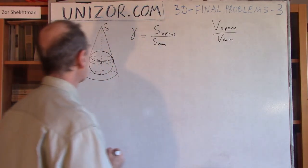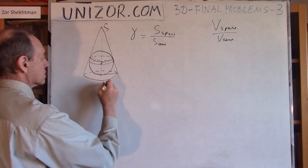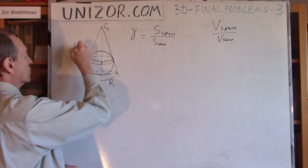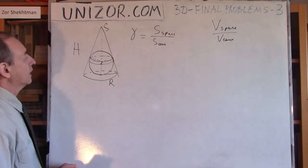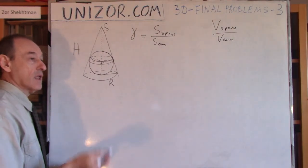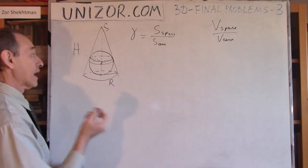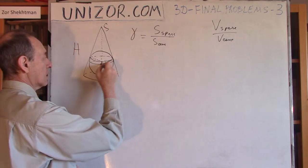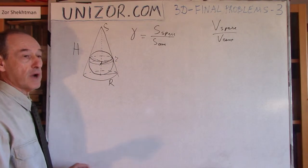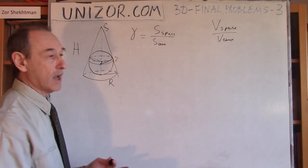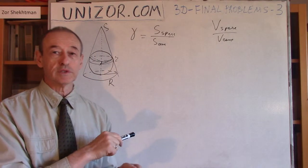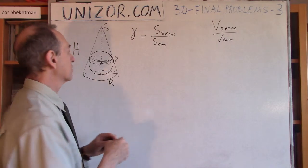Let's assume we have a certain cone which has radius R of the base and h as its altitude, its height. That defines the cone. If the cone is defined, then the sphere inside is also defined. We have to find the radius. This is the radius, let's call it lowercase r. First of all, we have to find the radius to be able to compare volumes and surface areas. I've already solved this particular problem in one of my previous lectures, but let's do it again.